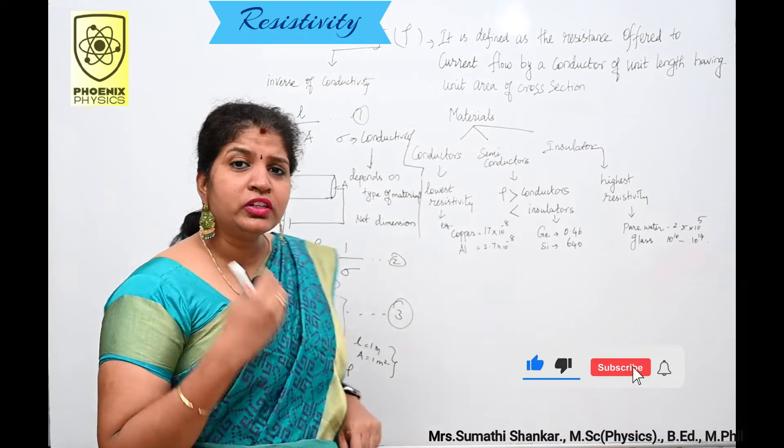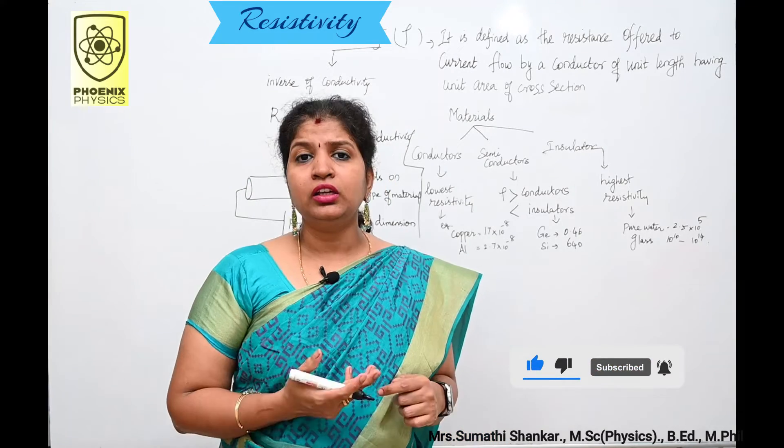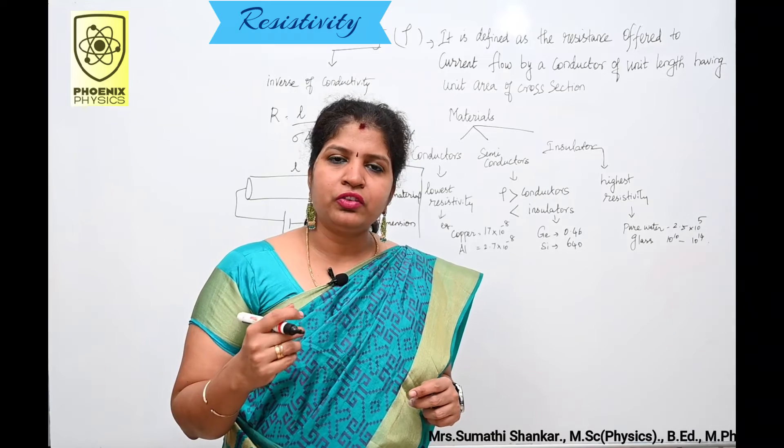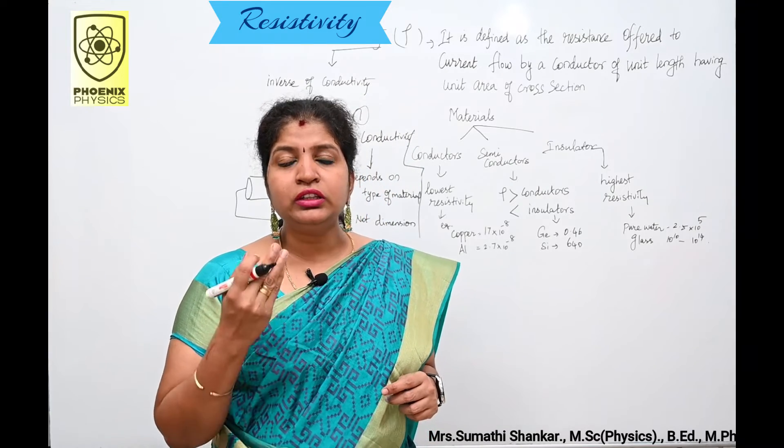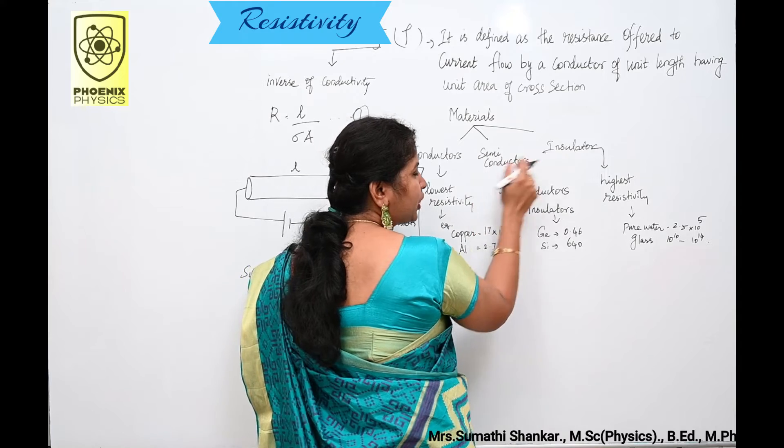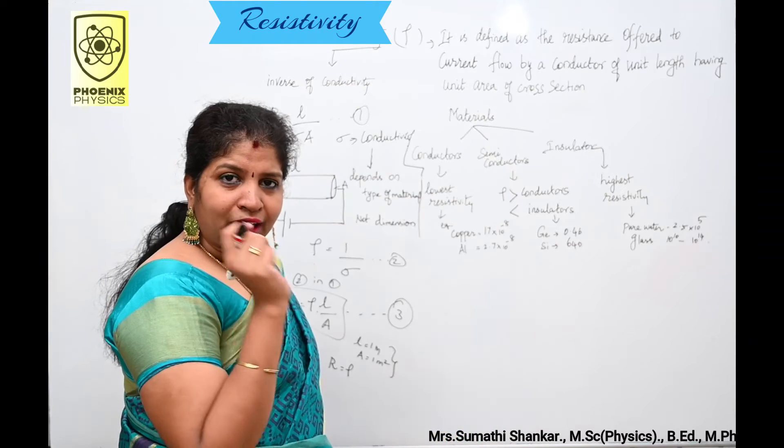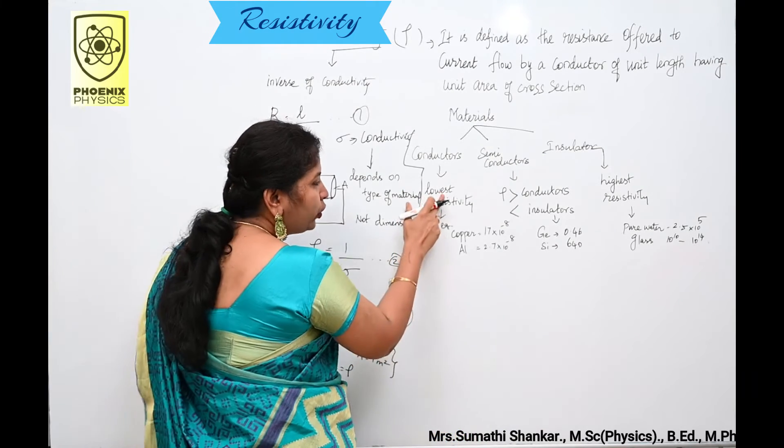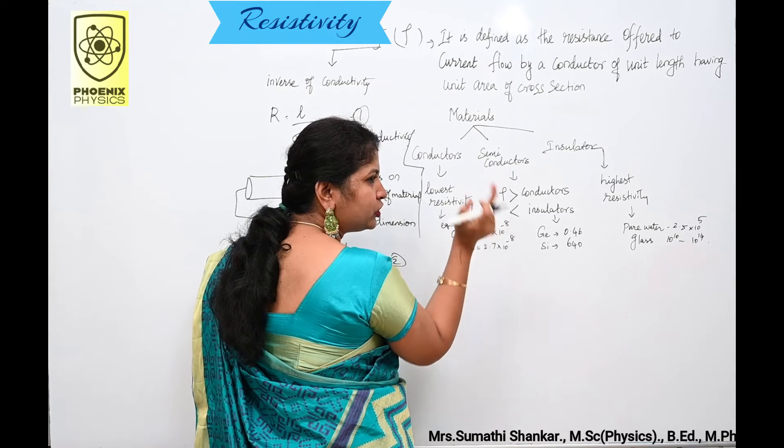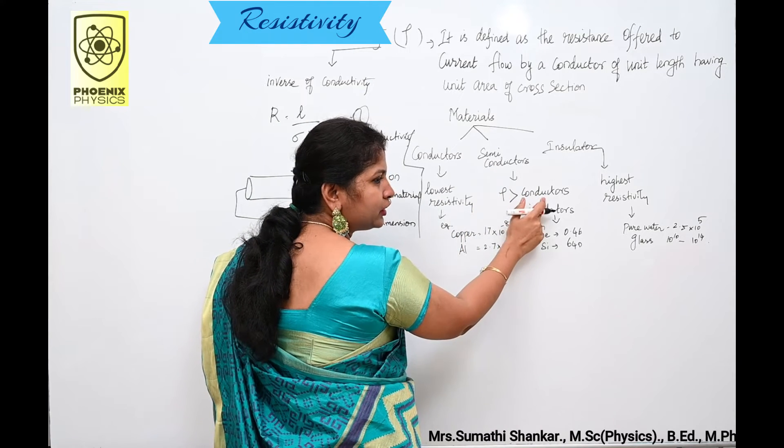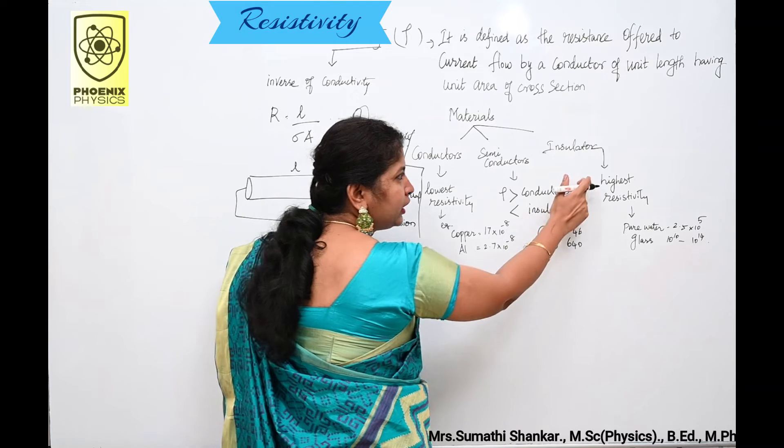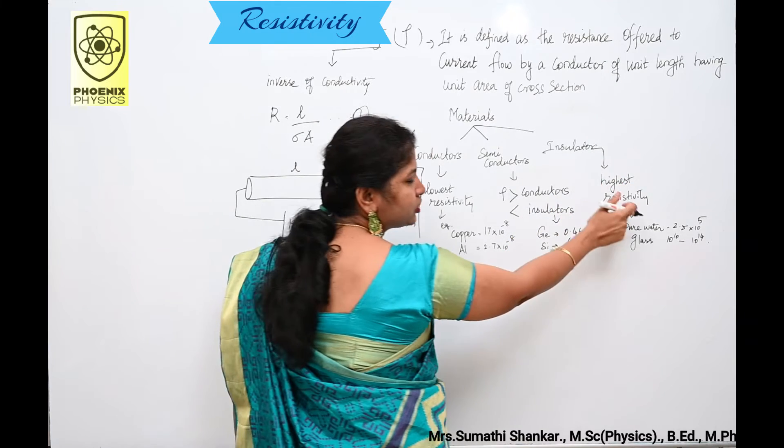Why do we study resistivity? Based on the resistivity, we can classify the materials into three types. That is conductors, semiconductors and insulators. Conductors have lowest resistivity. Semiconductors have resistivity greater than conductors but less than the insulators. Insulators have highest resistivity.